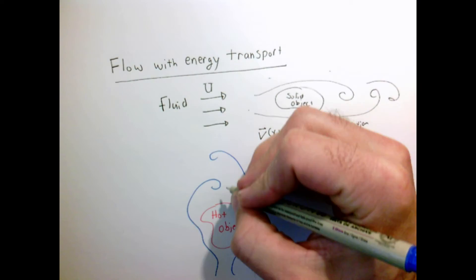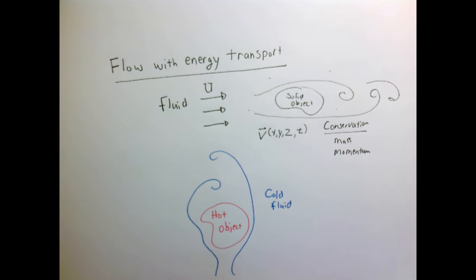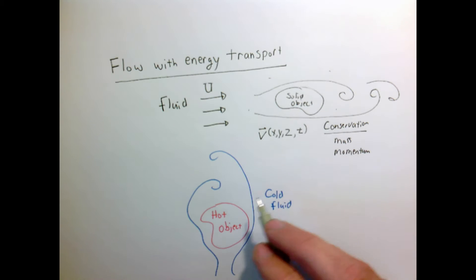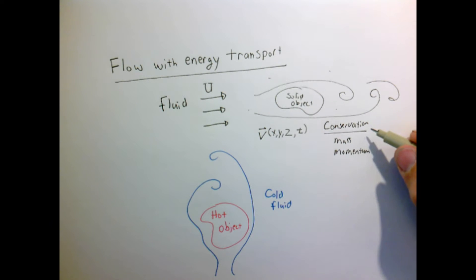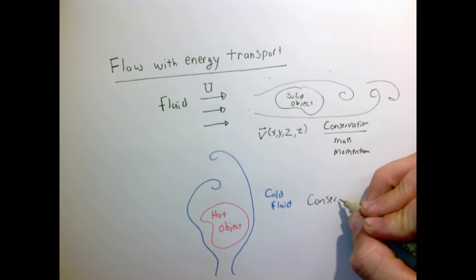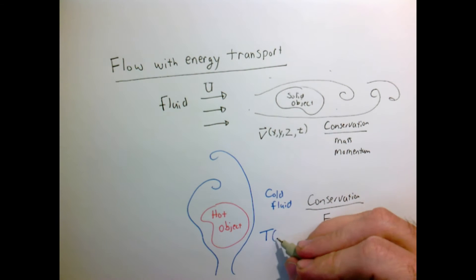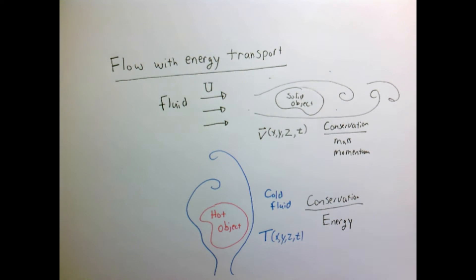Now we might want to consider problems such as the following. Say we have a hot solid object immersed in a cold fluid. That hot object is going to heat up the fluid which is in contact with it. That fluid is in turn going to be lighter and tend to rise or float up in the fluid. So now we might have flow around an object which is due to the coupling of the transport of momentum, mass, and heat or energy. To do such problems, not only do we need conservation of mass and momentum, we also have to consider conservation of energy.